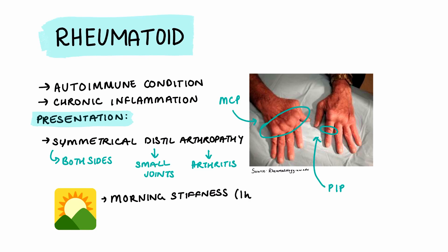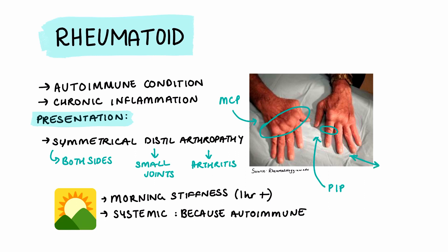With rheumatoid arthritis there are also systemic symptoms like muscle aches, weakness, fatigue, etc. On the hands, there are many different types of presentations. For example, the patient could have ulnar deviation and swan neck deformity.